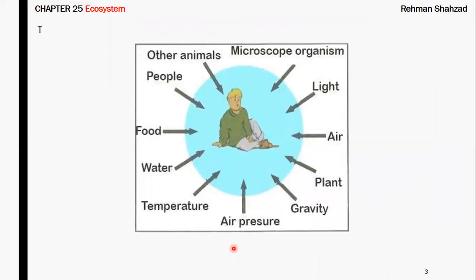For example, if we consider a living organism — say, a child — that child interacts with abiotic factors such as light, air, gravity, air pressure, temperature, water, and food. There are also biotic components around that child, including microscopic organisms and plants. All of these together form the environment of that living organism or child, and can be considered biotic components.